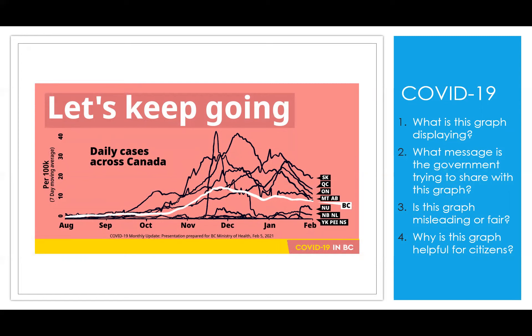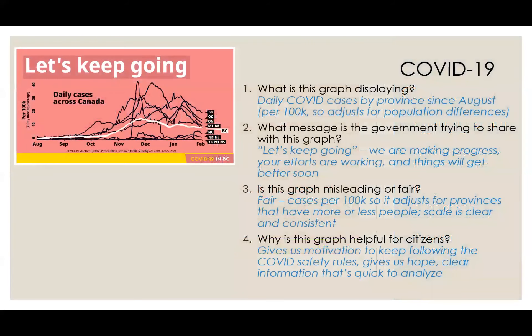What message is the government trying to share with this graph? I imagine the message is: we're making progress, your efforts are working, and things will get better soon. I take this as a motivational tactic — I know things are hard, but look at our cases: they're going down, and they're better than most of the rest of the country.